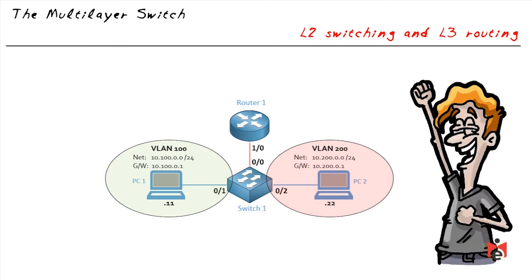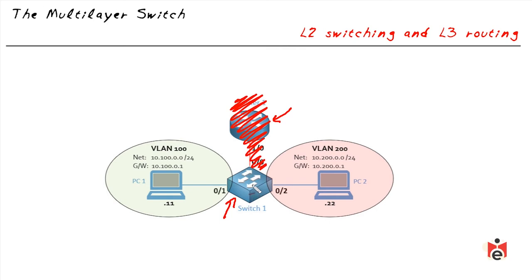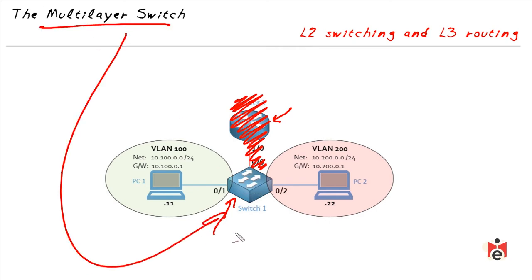Then somebody had a brilliant idea: what if we took the routing function and added it to the switch, so when the switch got a packet needing to be routed to a different IP network, the switch could make that routing decision and forward the packet? This would let us combine the router into one box — called a multi-layer switch — which can forward frames based on layer 2 information and packets based on layer 3 information.